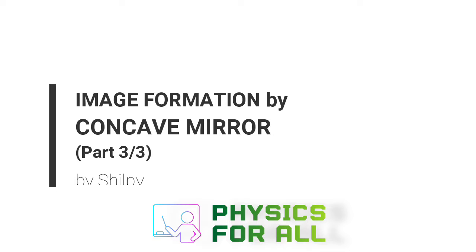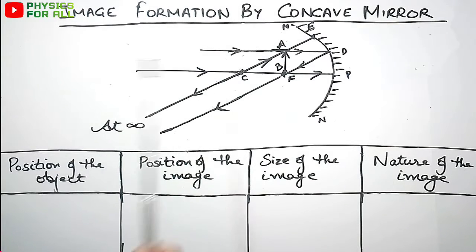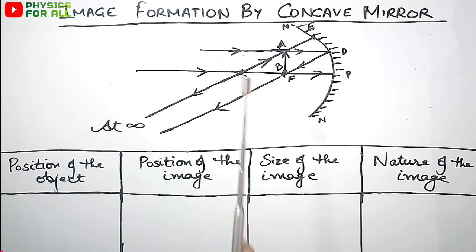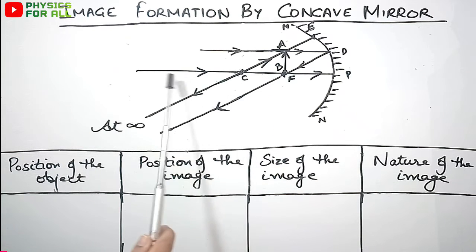Today we will discuss our fifth case of image formation by a concave mirror. Till now we have studied: when object was at infinity, image formed at focus; when object was beyond C, image formed between center of curvature and focus; when object was at C, image also formed at C; and when object was between C and F, image formed beyond center of curvature.